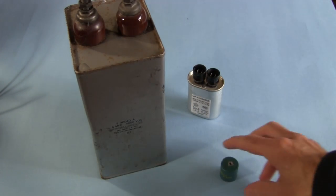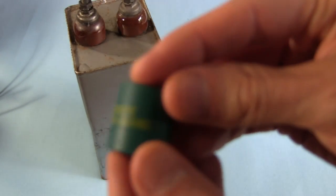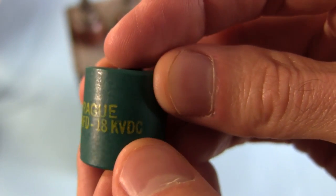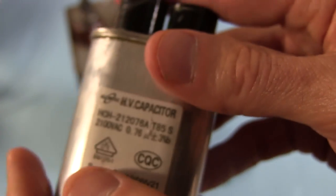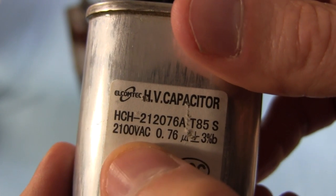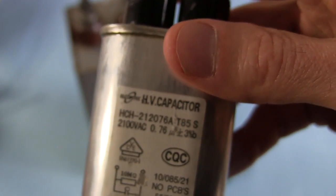When you buy a capacitor, the breakdown voltage is written on it. This doorknob capacitor has a breakdown voltage of 18 kilovolts. This one I got from a microwave oven. Its breakdown voltage is 2100 volts AC, and that's because it's used as an AC capacitor in the microwave oven. This big one right here is rated at 4000 volts DC.